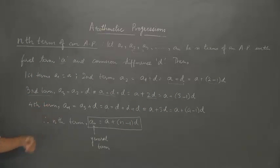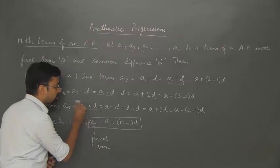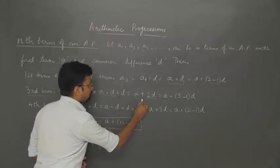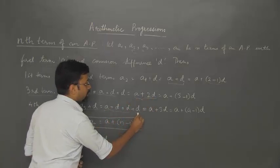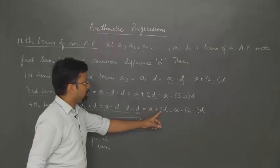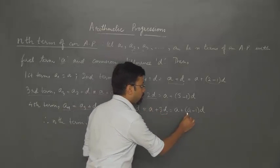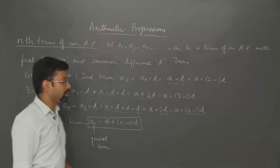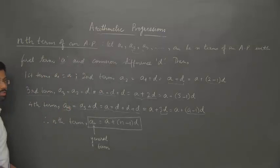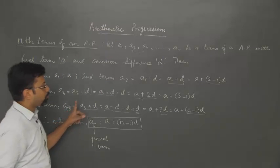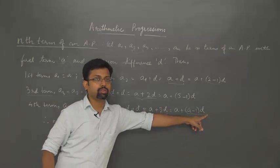The fourth term similarly can be written as a4 equal to a3 plus d. Since a3 is a plus 2d, we add another d to get a plus 3d. And 3d can be written as (4 minus 1) times d, so we obtain a4 equal to a plus (4 minus 1) times d.